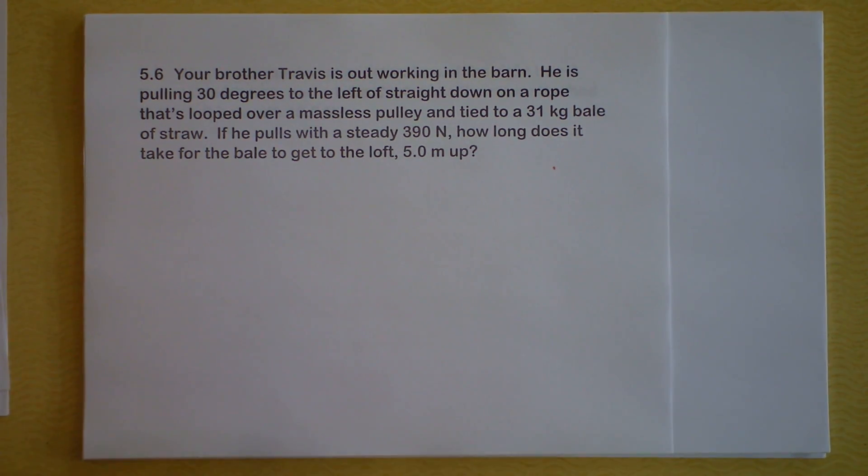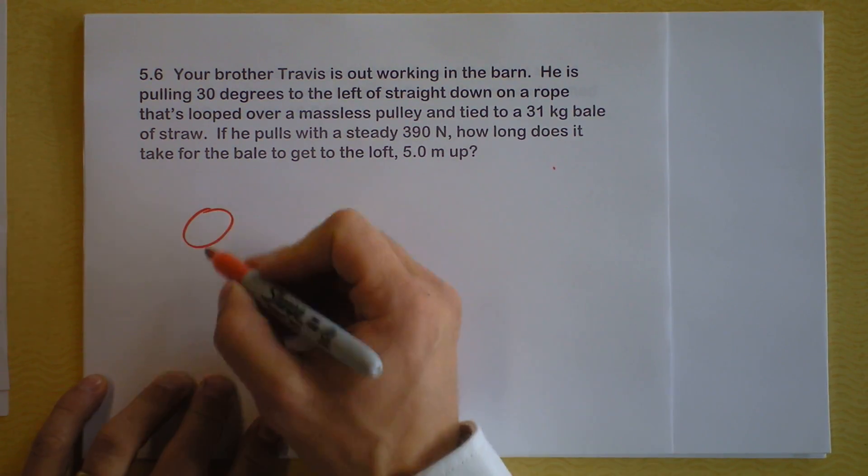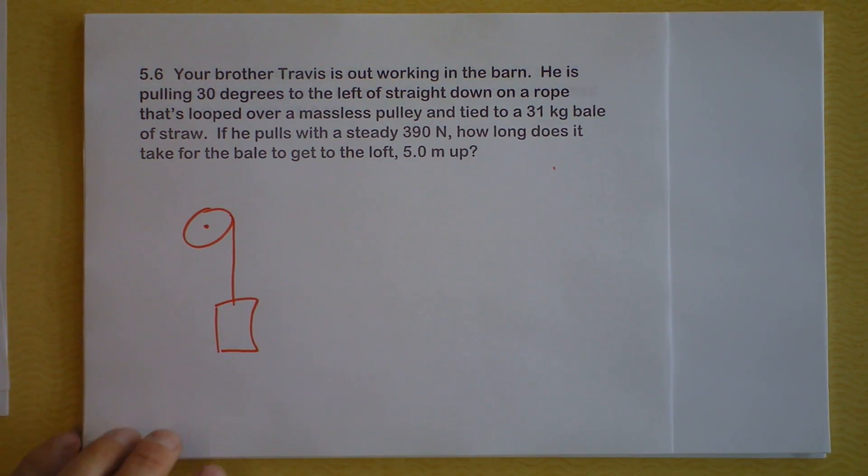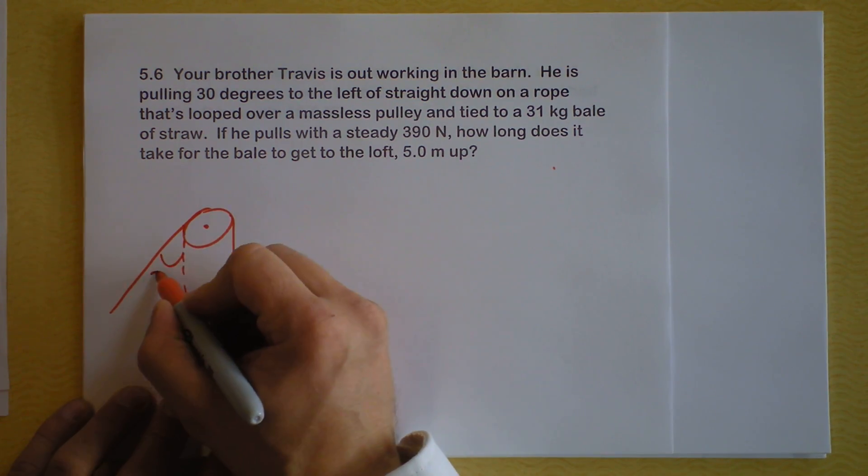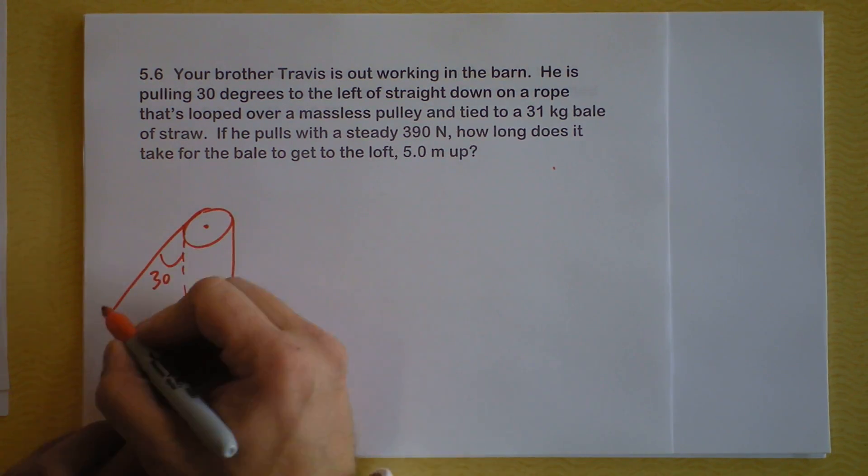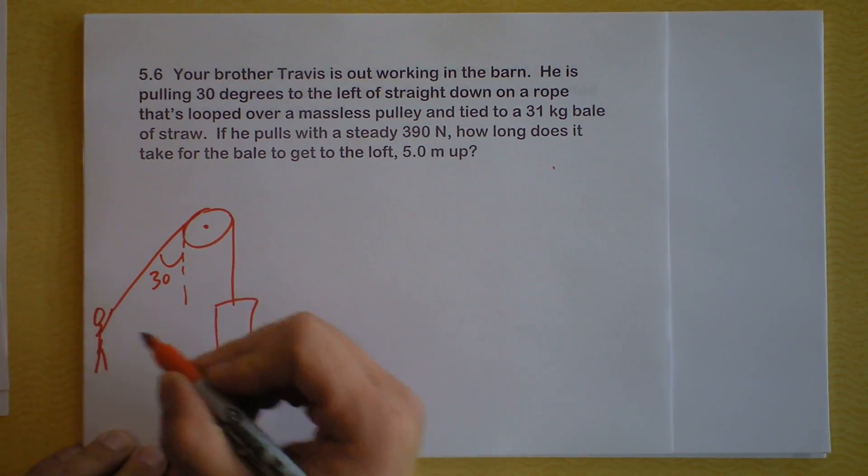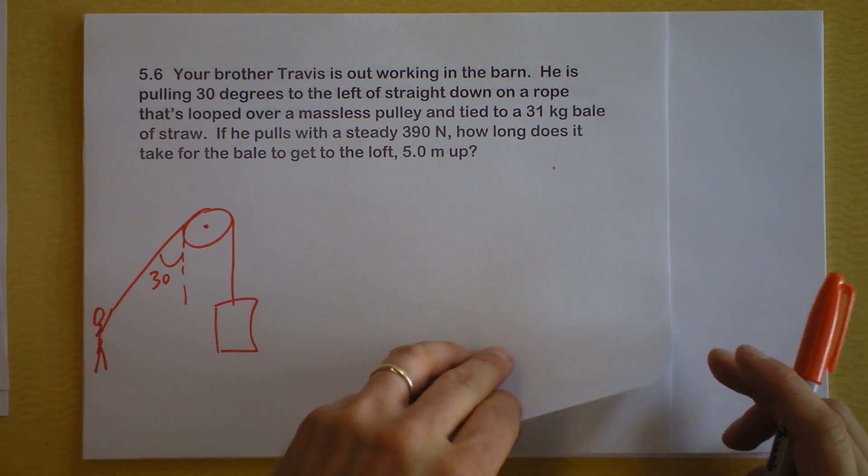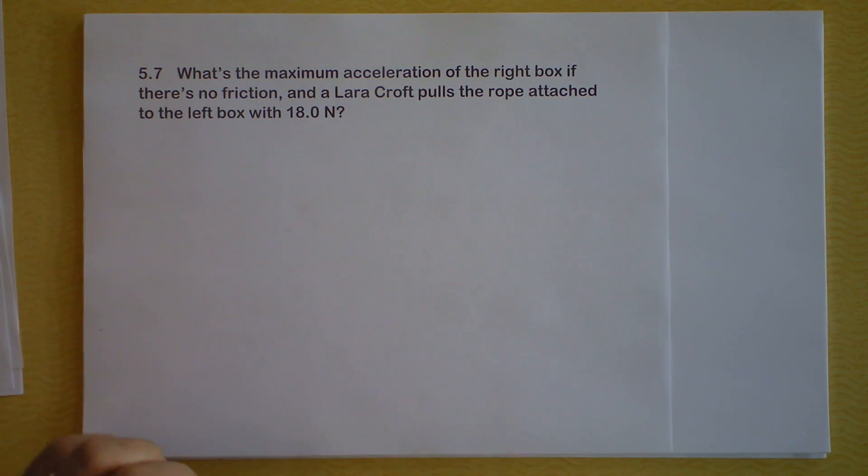Travis is out in the barn. He's pulling - oh my gosh, maybe a picture would help with this. Let's start out by saying that there's the pulley, and the bale of hay is right here. This angle, 30 degrees, is the angle of the pull right there. Travis is standing over here, pulling that bale in that direction. Well, he's pulling the rope which is going over the pulley which is pulling the bale. So I'm wondering, given those numbers, if you can figure out how long it takes for the bale to get to the loft, which is obviously where it needs to go. Watch out for fires in lofts, though.